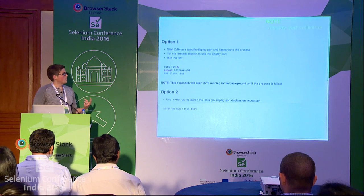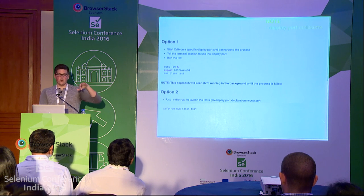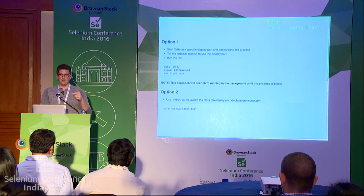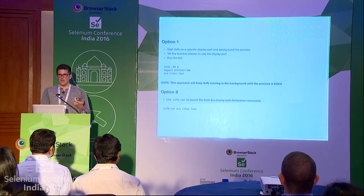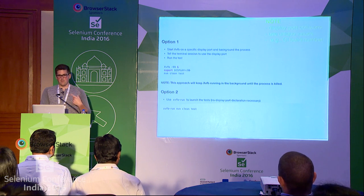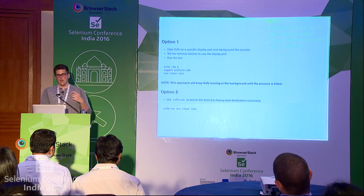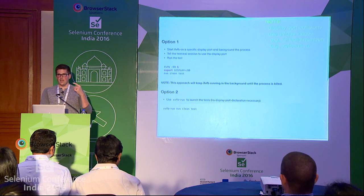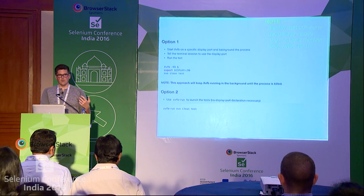A couple things to think about: display port collisions. If you have multiple jobs running potentially at the same time, and they end up using hard-coded ports like port 99 for all your jobs, you'll end up having things run into each other. So you want to use unique values for your display ports. You can leverage environment variables and pull the CI job number to use for a display port, or XVFB-run has a dash-A flag where it'll randomly find an available port and shut it down when done, which helps remediate any potential display port collisions.